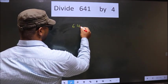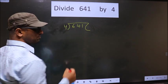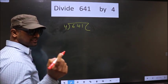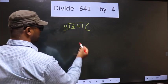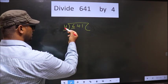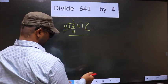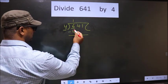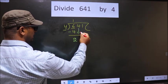That is 641, 4 here. Now here we have 6 and here 4. A number close to 6 in 4 table is 4 once 4. Now you subtract. 6 minus 4, 2.